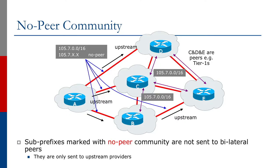The second example is the no-peer community. As shown in the diagram, it is intended to let upstream networks know to only send this prefix to upstreams and not to bilateral peers. Starting at Router A, again trying to load balance, we send the aggregate to our three upstreams and send the traffic engineering subnets with no-peer attached to them — one on each link.